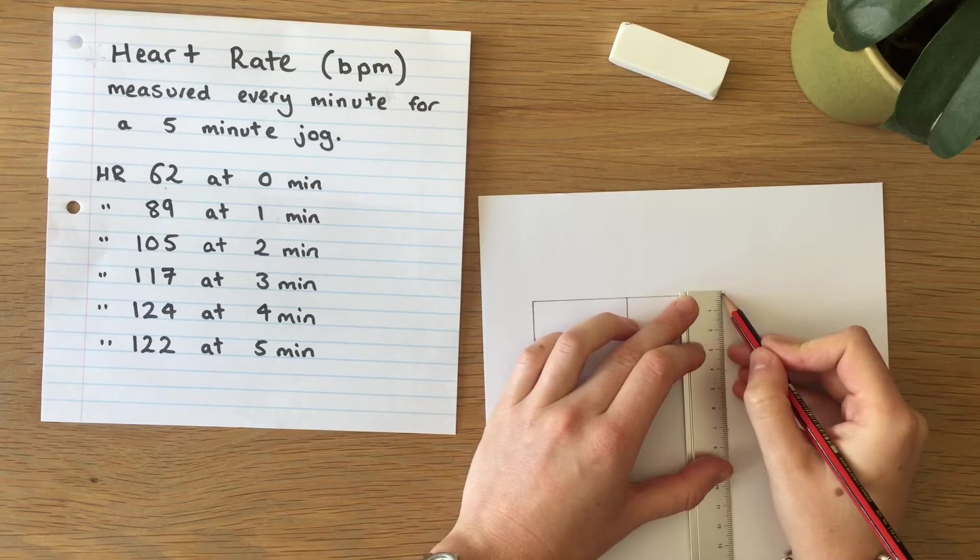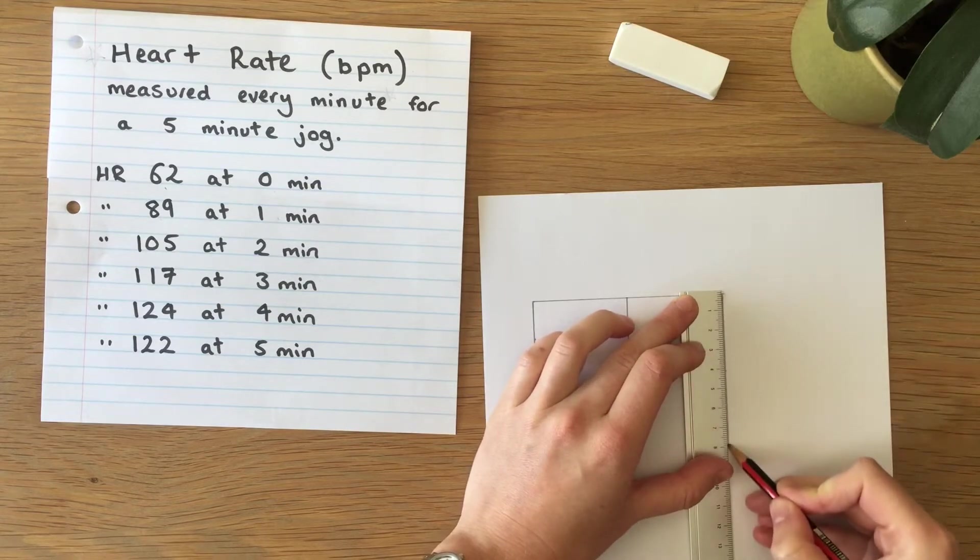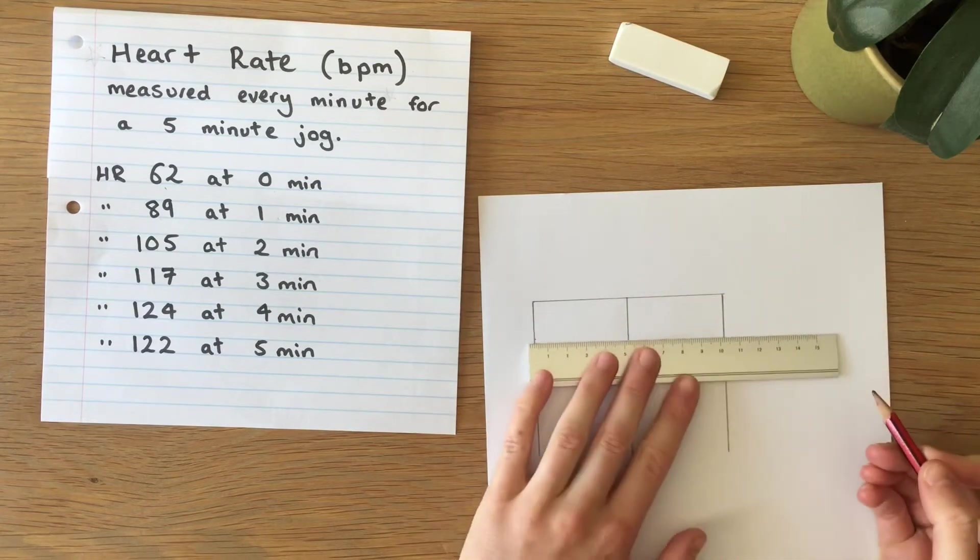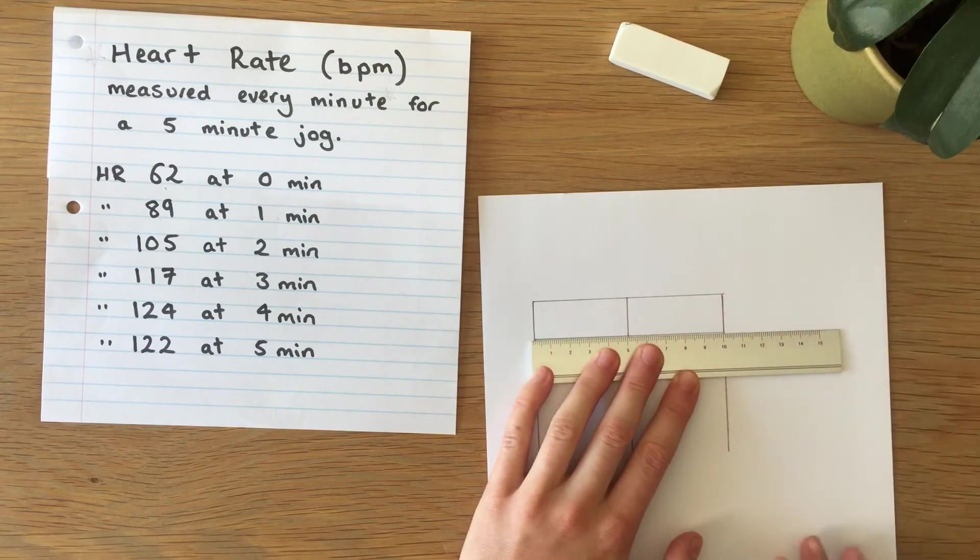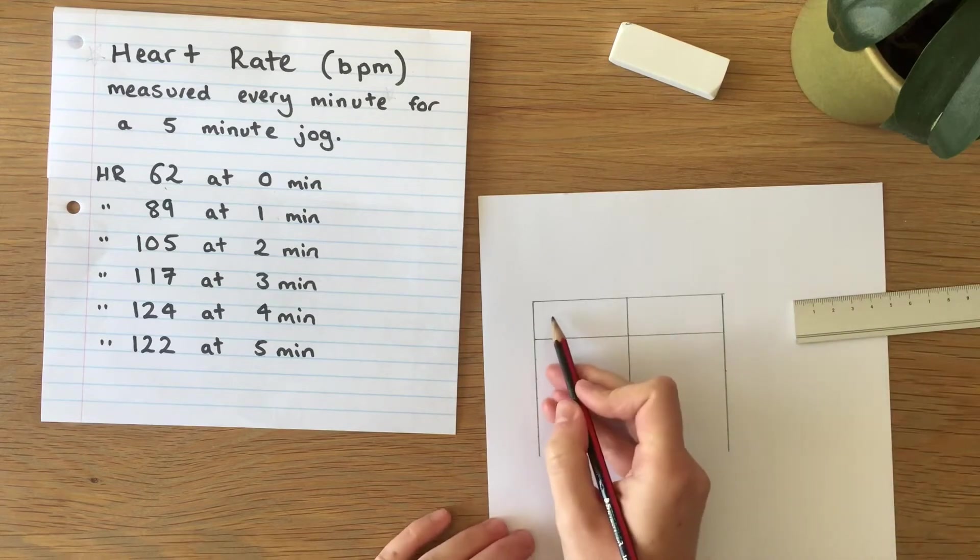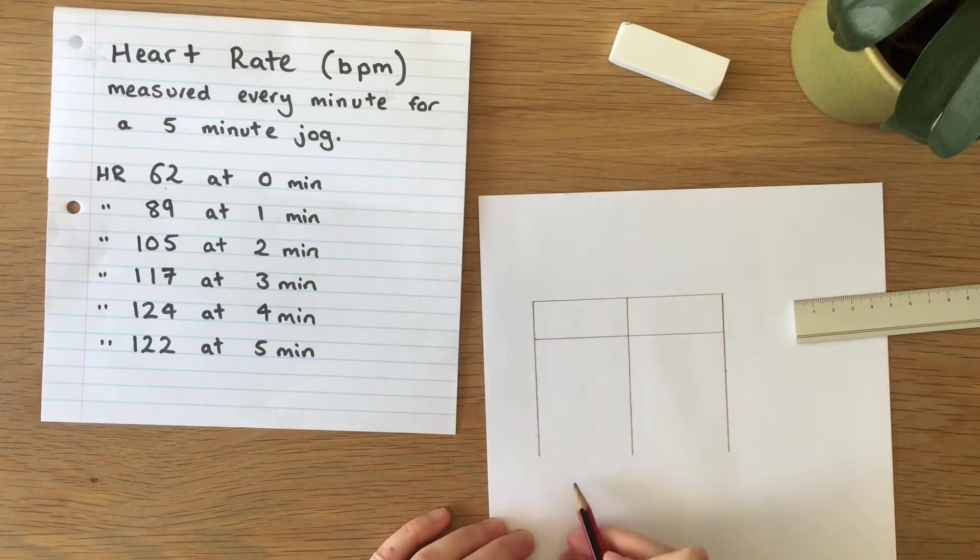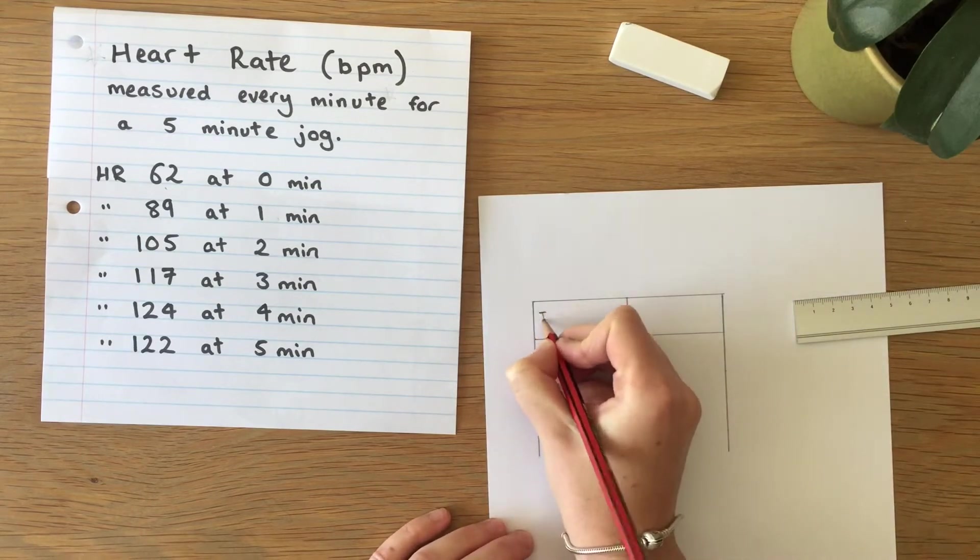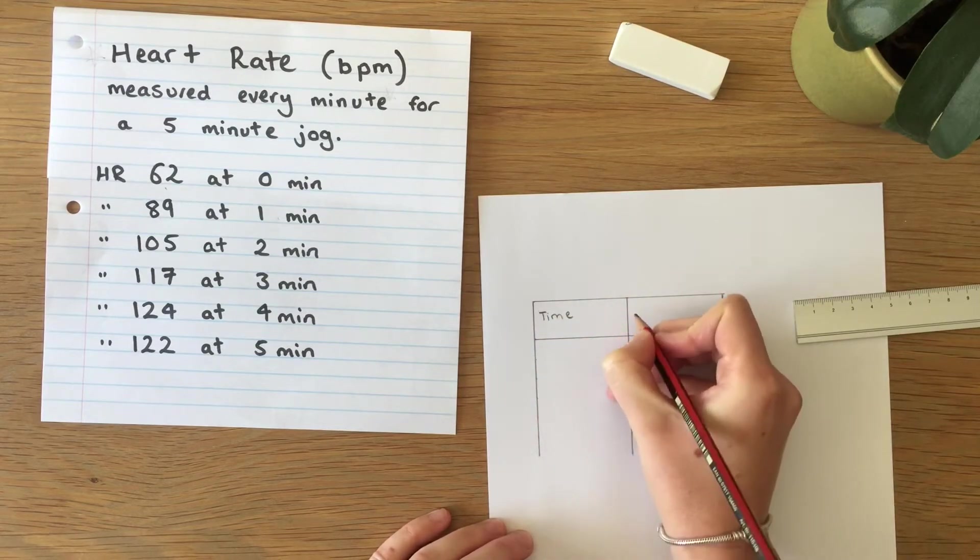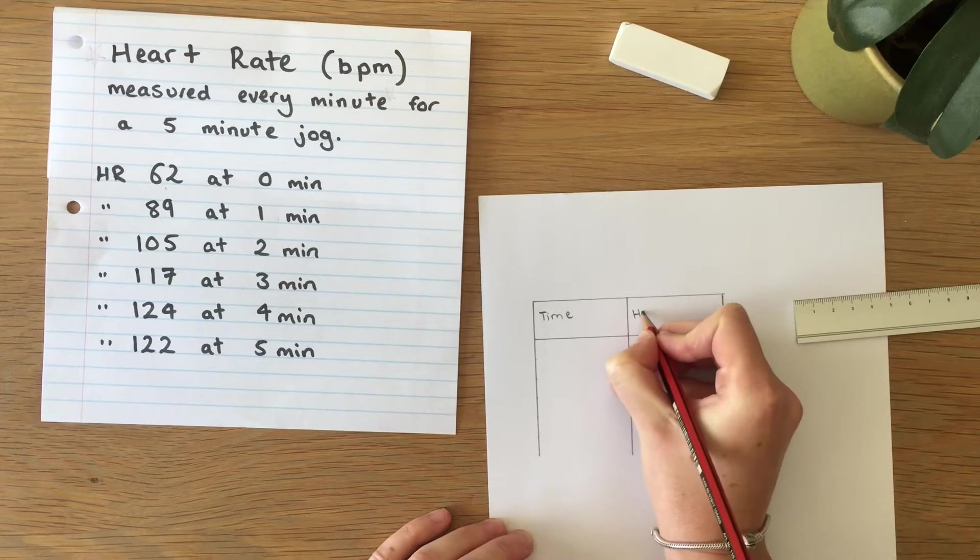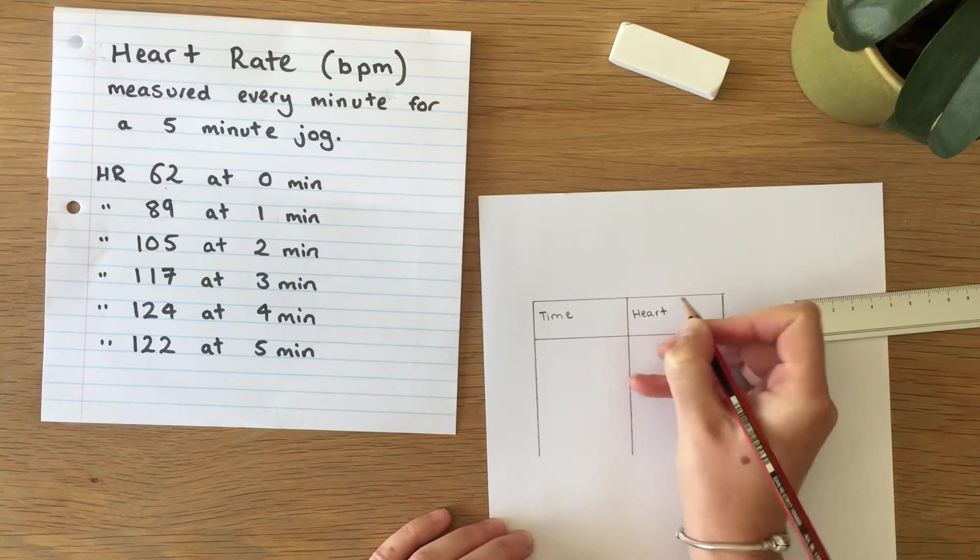So time is going to be our independent variable here and in general we put the independent variable in the first column. So we're going to put time here and heart rate is our dependent variable so we're going to put that in the right-hand column.